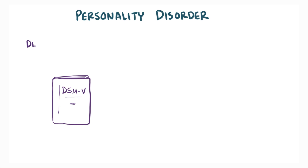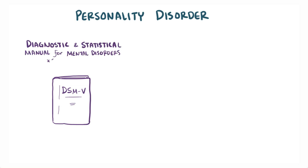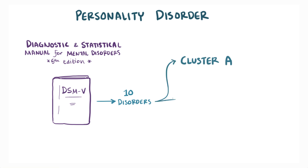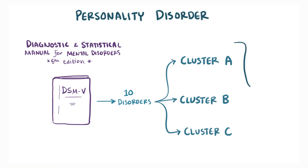The DSM-5, or the Diagnostic and Statistical Manual for Mental Disorders, 5th edition, lists 10 personality disorders that are split into three different clusters, referred to as clusters A, B, and C. These used to be under the category Axis 2, but that way of organizing isn't really used anymore.